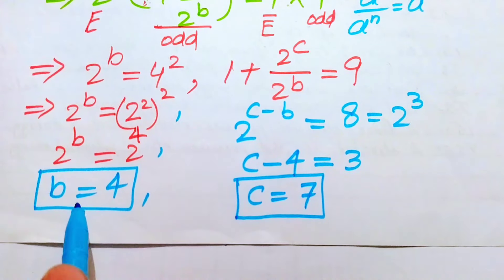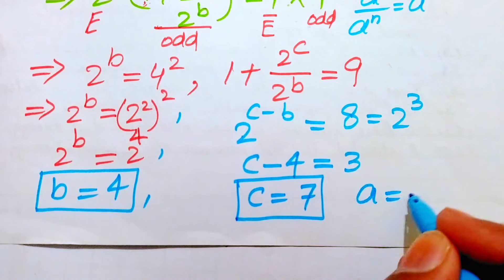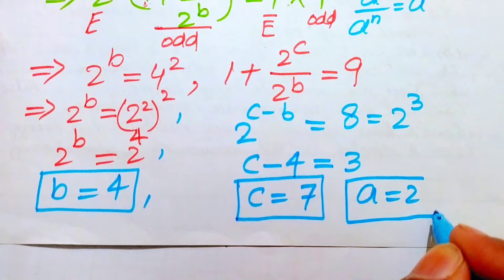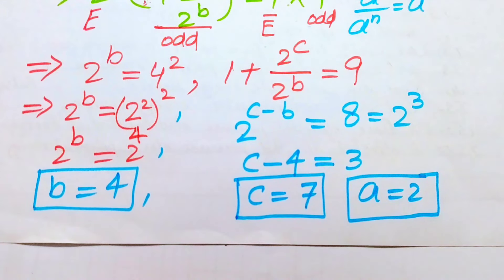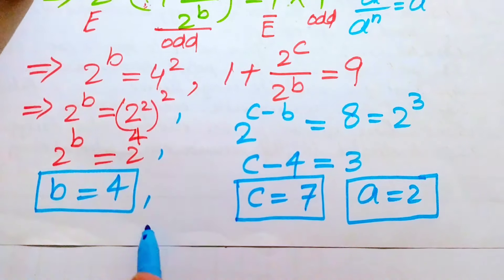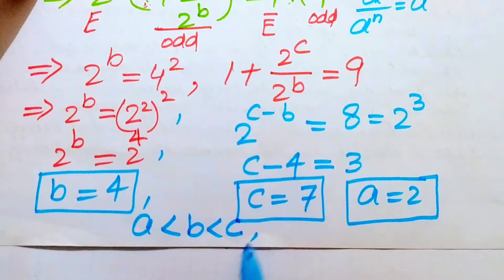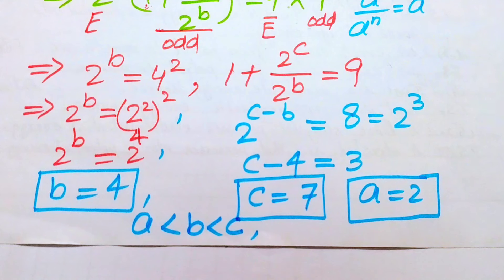So the three values are: a equals 2, b equals 4, and c equals 7. These are all positive integers, and we verify that a is less than b is less than c (2 < 4 < 7), satisfying the given conditions. This is the final answer. Thank you so much for watching this video — please subscribe to my channel for more exciting videos.